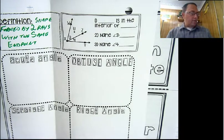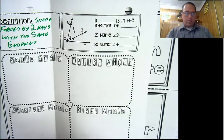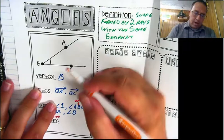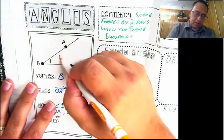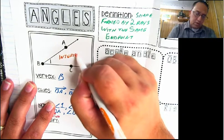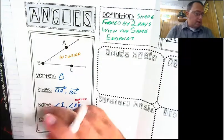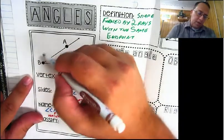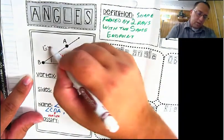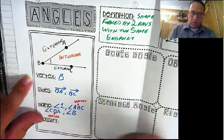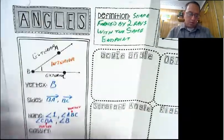Angles have different parts. You have the interior of the angle - that's right here in between the two rays. And you have the exterior - the stuff outside the rays. This area over here is exterior. And this down here is also exterior. All of that is exterior to the angle.